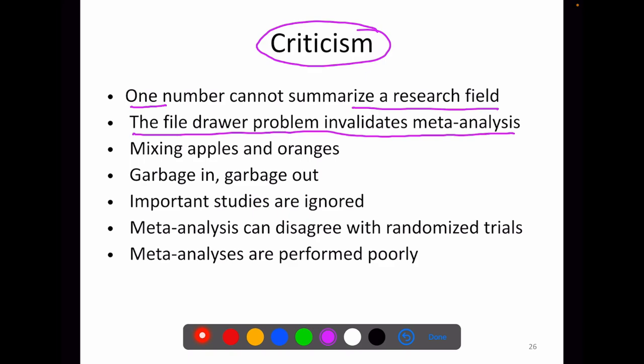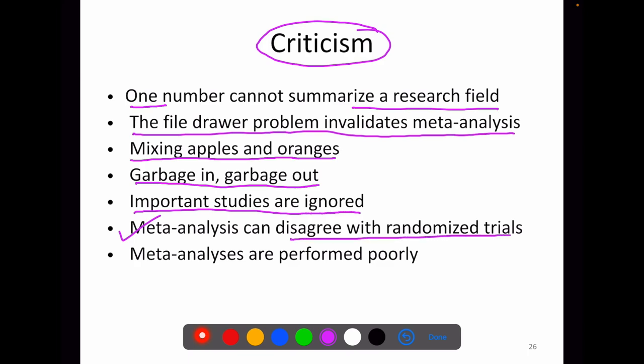Publication bias is a problem for any kind of literature search, including the clinician who searches a database to locate primary studies. Another criticism is mixing apples and oranges — because of differences in studies, pooling does not make sense. Then the garbage-in-garbage-out issue: if the studies included are not of good quality, we will not get correct results, though this can be addressed with subgroup and quality analysis. Sometimes important studies are ignored, intentionally or unintentionally, due to lack of access — addressed by proper protocol and inclusion criteria with transparency. Finally, some argue that a randomized controlled trial with good study quality is always better than a meta-analysis, and that meta-analyses are sometimes performed very poorly.